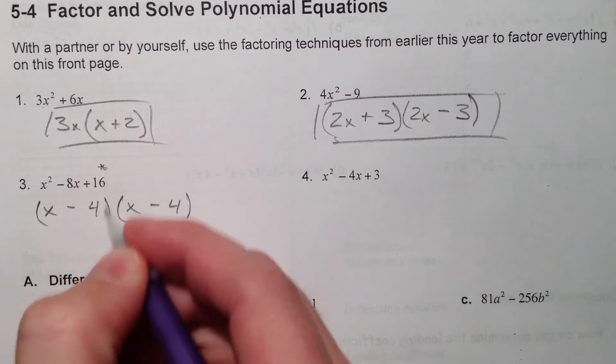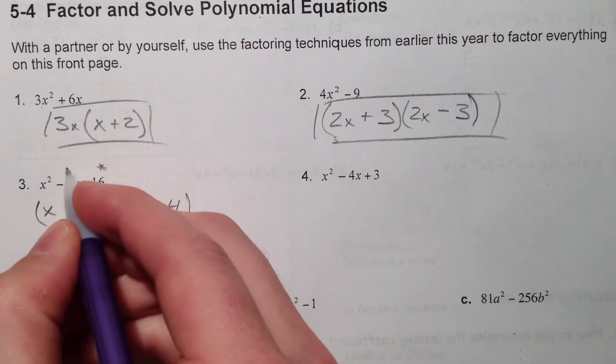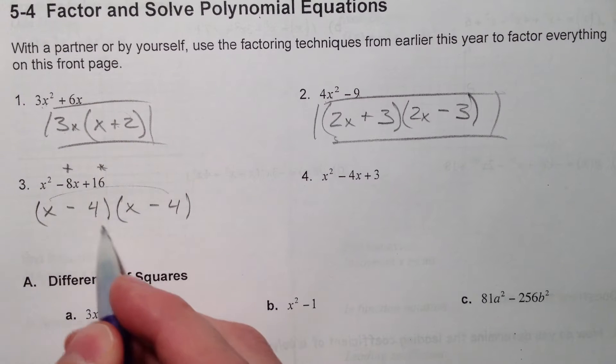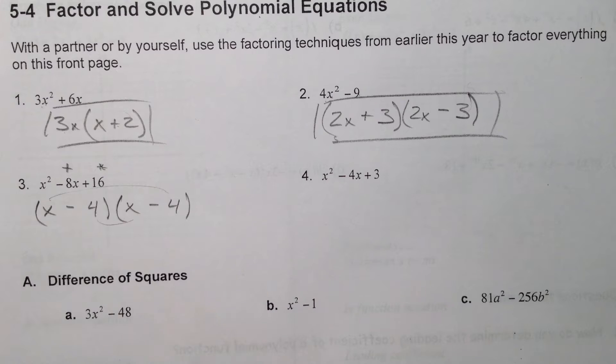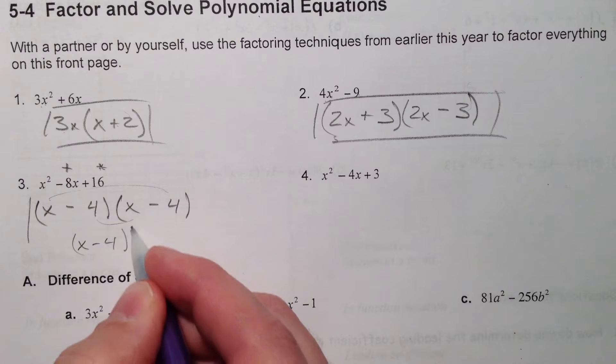So we say it's got to multiply to 16 because these two numbers, the last terms, multiply to 16, and it's got to add to negative 8 because your negative 4x and your negative 4x add to negative 8. And so you could also write this as (x - 4)².